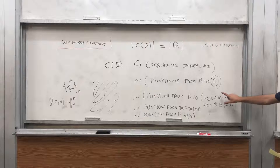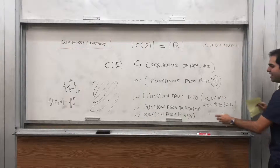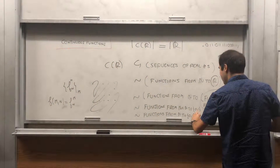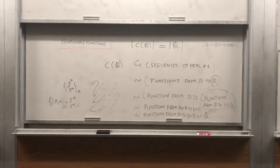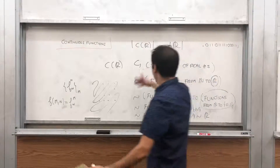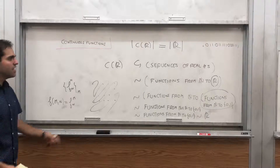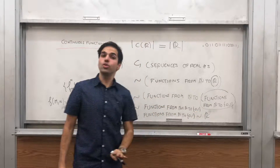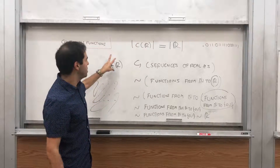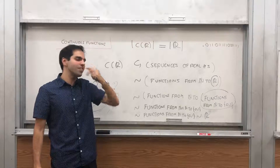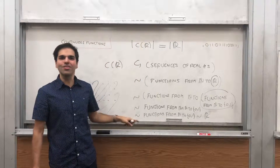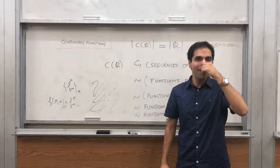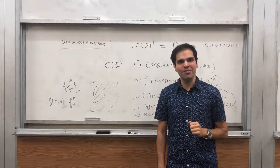Using this chain of equivalences, composing all those maps we get an injection from C(ℝ,ℝ) to ℝ. Therefore the cardinality of C(ℝ,ℝ) is less than or equal to that of ℝ, and we've shown ℝ is less than or equal to C(ℝ,ℝ), so we can conclude they have the same cardinality. I hope you liked this little math extravaganza and found it enlightening. If you want to see more math, please make sure to subscribe to my channel — thank you very much.